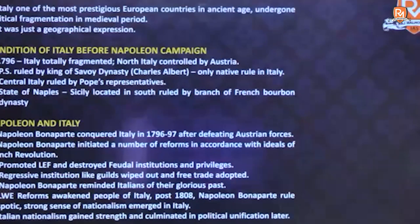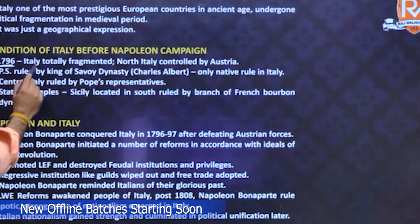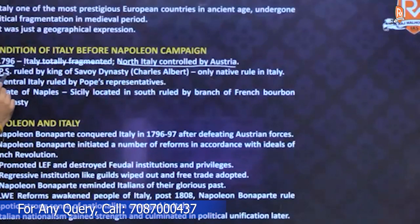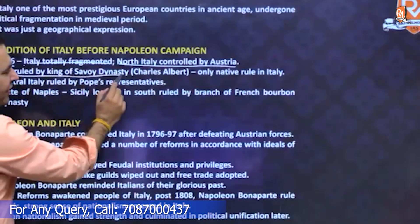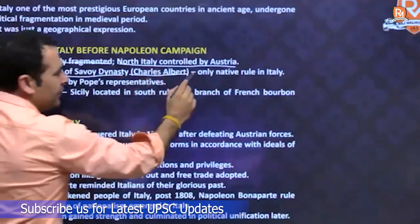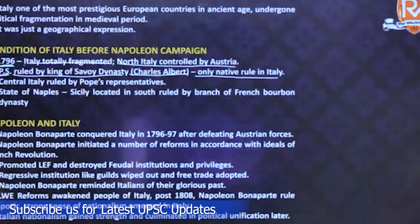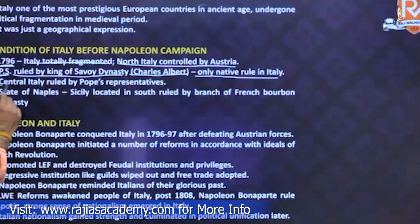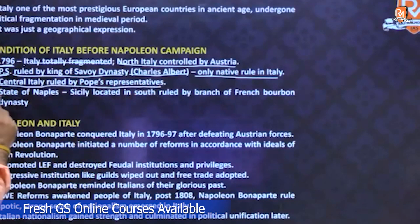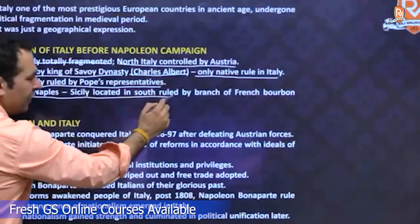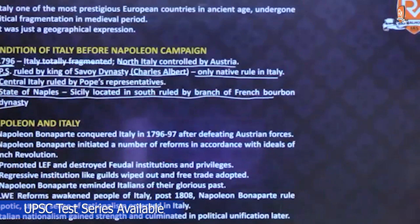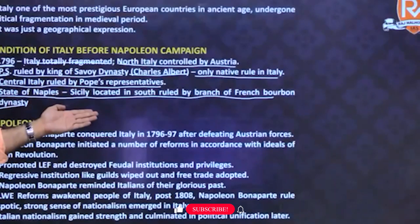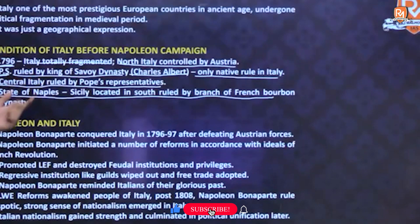Condition of Italy before Napoleon's campaign: in 1796, Italy was totally fragmented. North Italy was controlled by Austria. In Piedmont-Sardinia, it was ruled by Charles Albert of the Savoy dynasty — the only native rule in Italy. Central Italy was ruled by the Pope's representatives. The state of Naples and Sicily in the south was ruled by a branch of the French Bourbon dynasty.